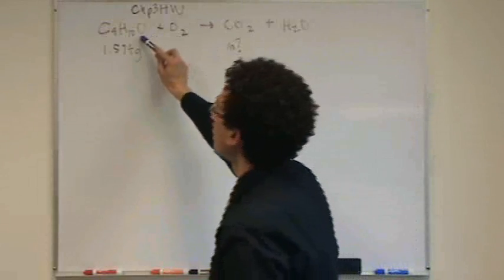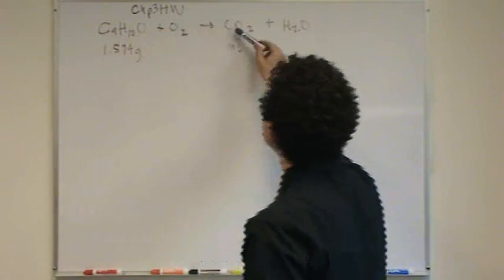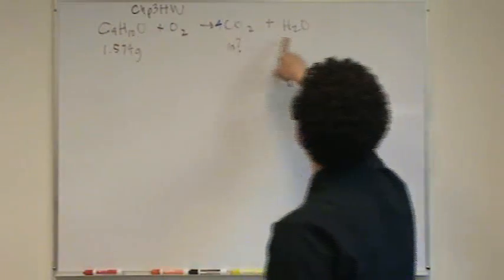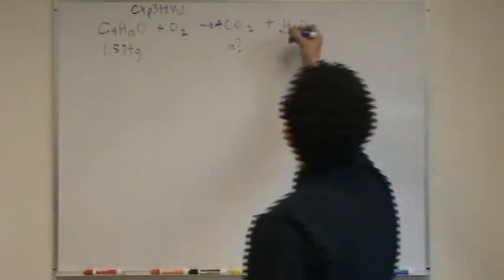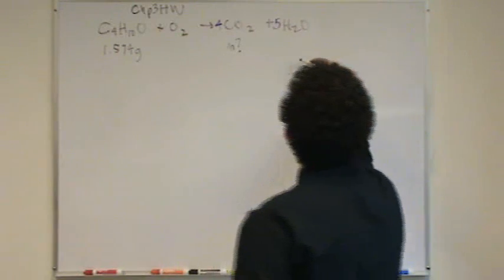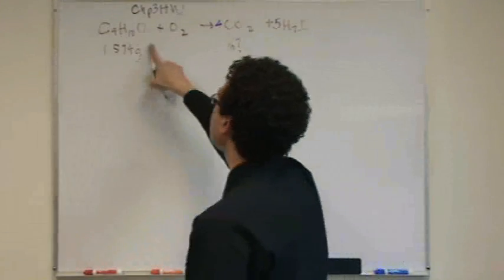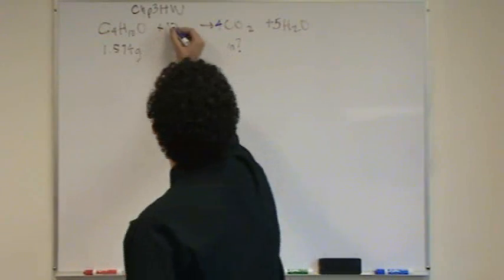If it's combustion, I'll start here. So 4, 4. And then 10, so I have to have a 5 here to have 10. And then 8 plus 5 is 13, minus 1 is 12, so 6.